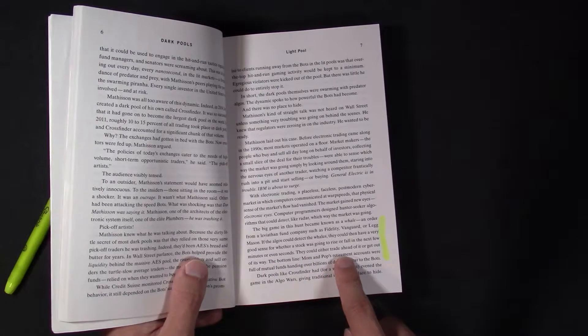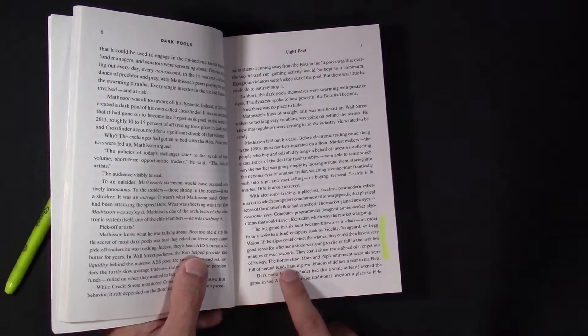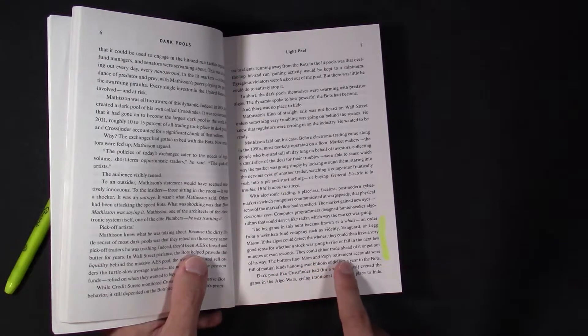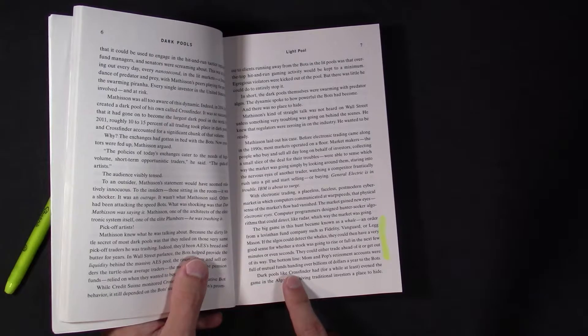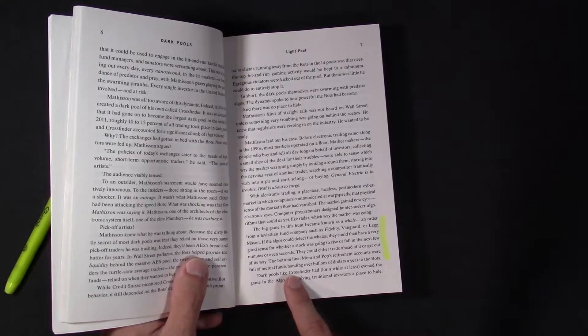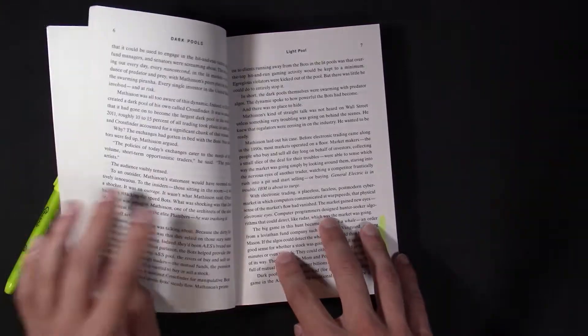They either could trade ahead or get out of its way. Basically, the bottom line, mom and pop retirement accounts were full of mutual fund handing over billions of dollars to the bots.